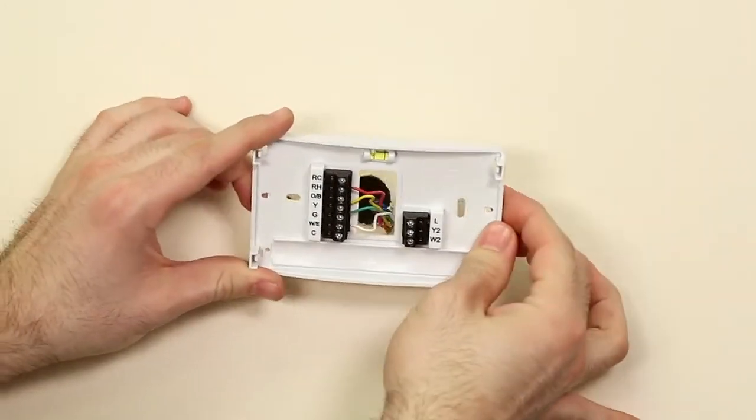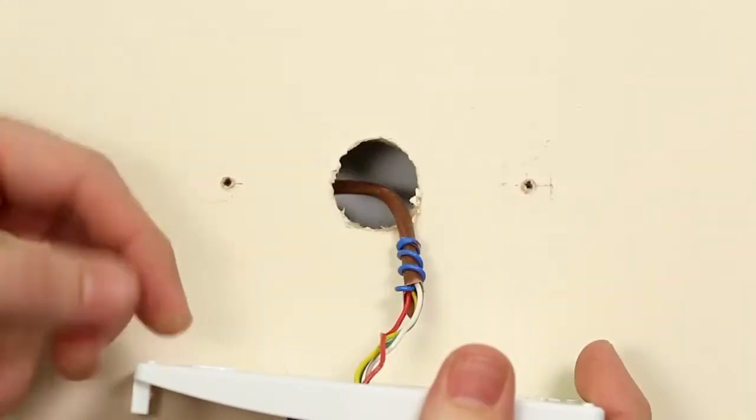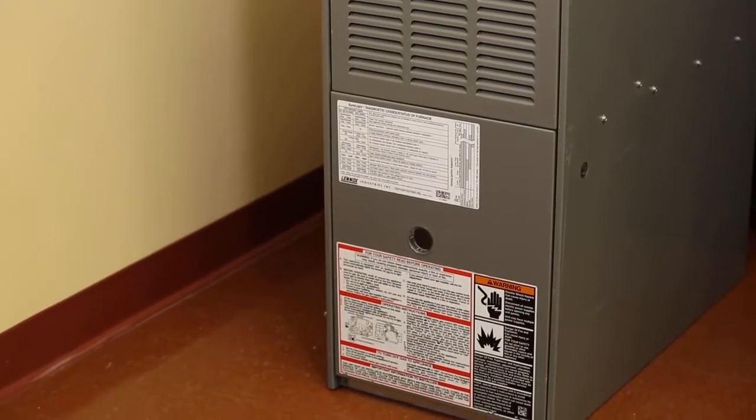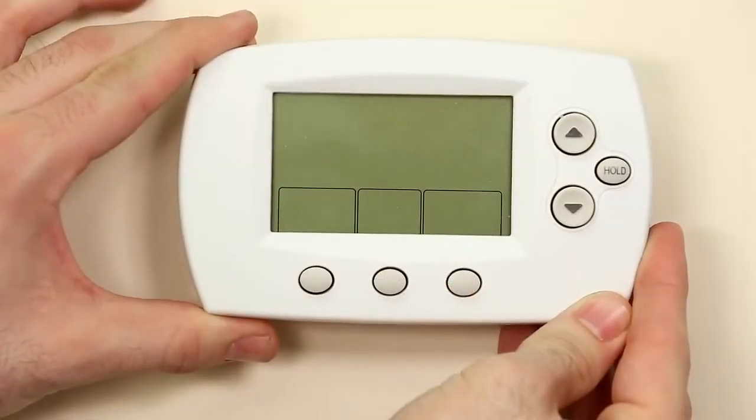There are two places to look for an unused wire: in the wall behind your thermostat base plate and in your furnace. Before you get into your furnace, let's take a look in the wall behind your thermostat.